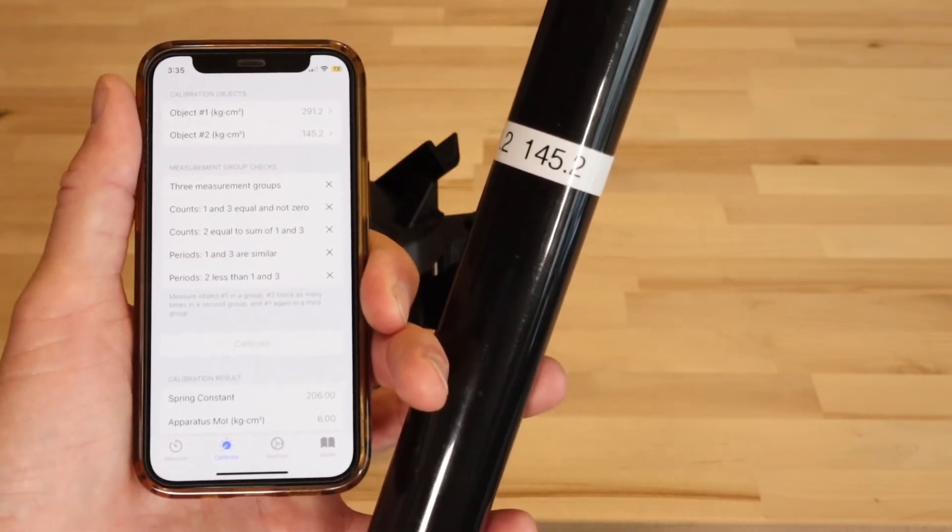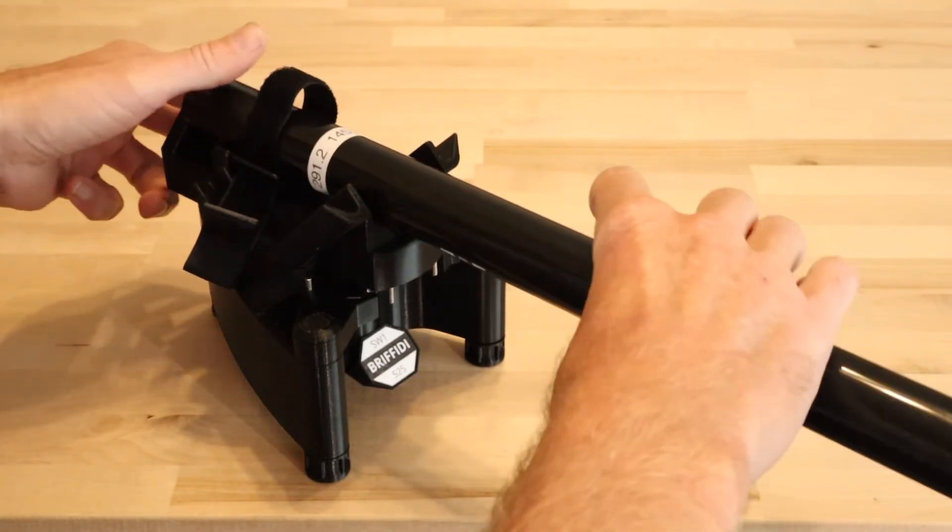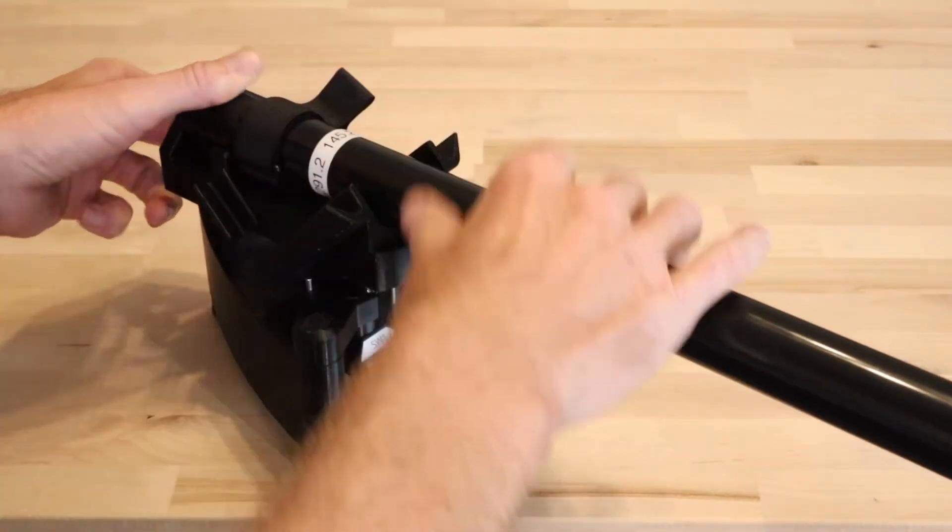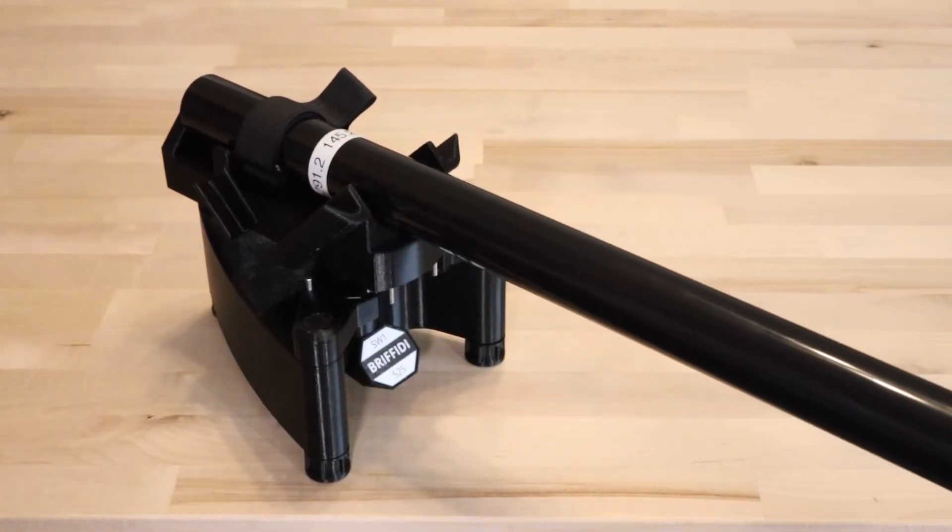Before calibration is complete, you will not get matching measurements. Place the calibration rod into the SW1 in the number one configuration. Ensure that the end of the rod is tight against the back wall of the cradle. The weight should be installed or the rod should be fully retracted.